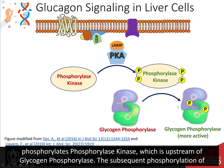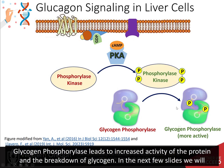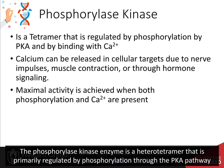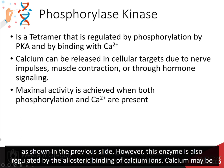This in turn phosphorylates phosphorylase kinase, which is upstream of glycogen phosphorylase. The subsequent phosphorylation of glycogen phosphorylase leads to increased activity of the protein and breakdown of glycogen. In the next few slides we will focus on the activities of the phosphorylase kinase.